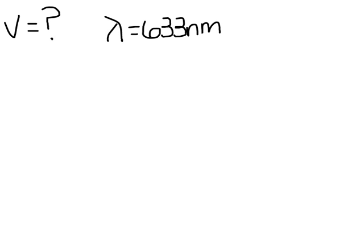Question three: A helium laser emits light with a wavelength of 633 nanometers. What is the frequency of light? Again, it doesn't say anything about energy, so we're going to use the equation C equals lambda V. We're going to solve for V.